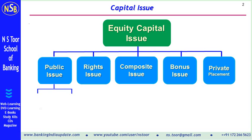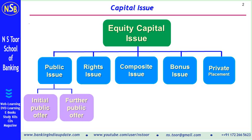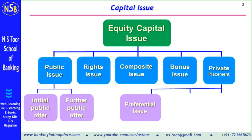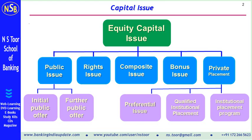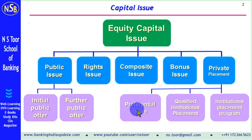Public issue can be an initial public offer — that is IPO — or it could be a further public offer — that is FPO. Similarly, private placement can be a preferential issue, or it can be a qualified institutional placement, or it could be an institutional placement program. Public issue has two variants, and private placement has three variants.